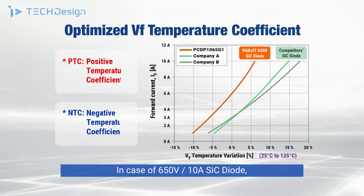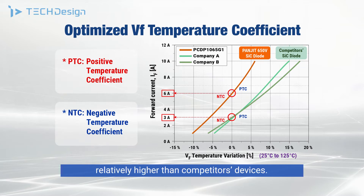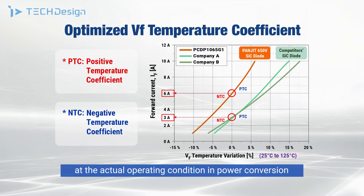Panjit SiC Diode has an optimized VF temperature coefficient. In the case of a 650V 10A SiC Diode, VF has NTC characteristic up to 6A. This crossover point between NTC and PTC is relatively higher than competitor devices. Therefore, we can expect lower VF value at the actual operating condition in power conversion systems, and it will lead to conduction loss minimization.